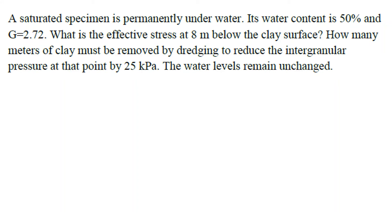The next question: a saturated soil specimen has porosity of 50% and G value of 2.72. How many meters of clay must be removed by dredging to reduce the intergranular pressure at that point by 25 kPa? The water level remains unchanged.